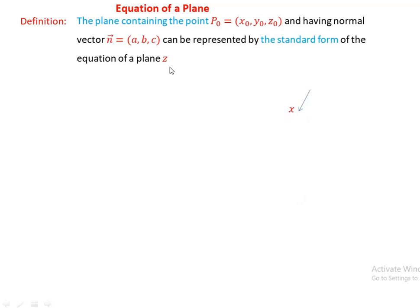Consider the coordinate axes: x-axis, y-axis, and z-axis. If there is a normal vector n perpendicular to the plane, then any vector from P-naught to P lying in the plane is perpendicular to n. Here P-naught has components x-naught, y-naught, z-naught and P has components x, y, z, while the normal vector n has components a, b, c.